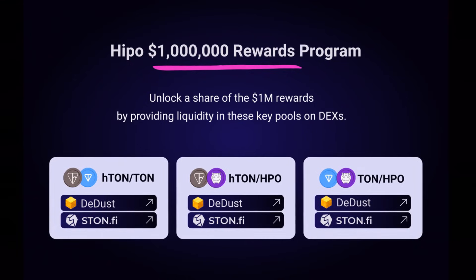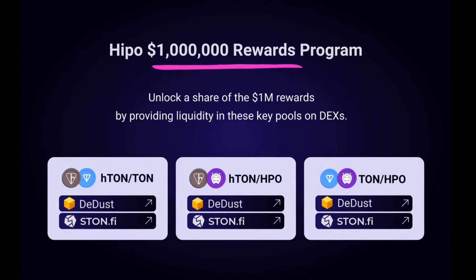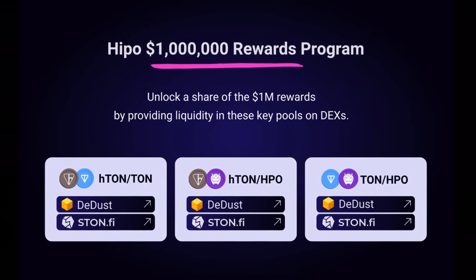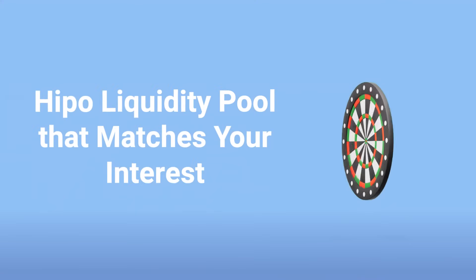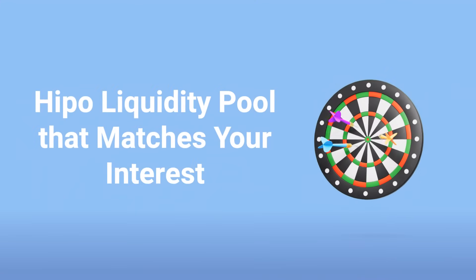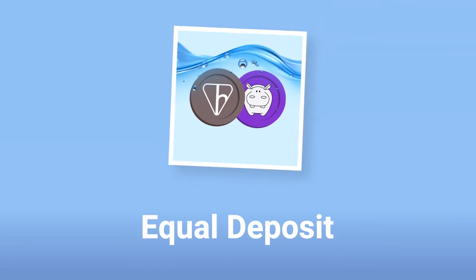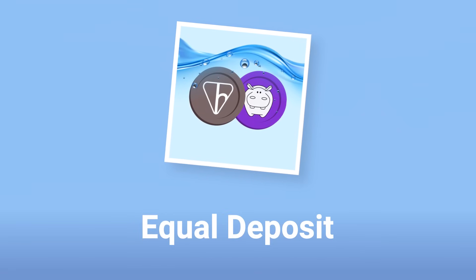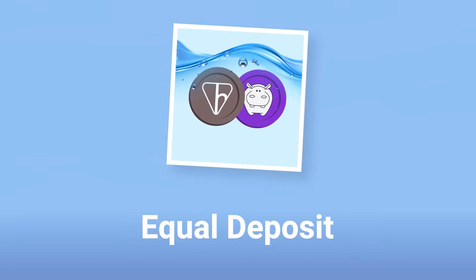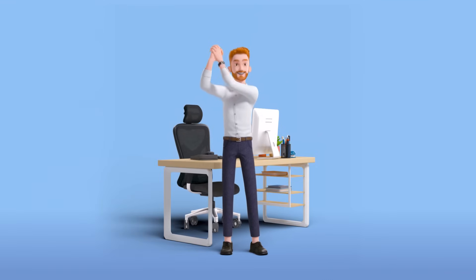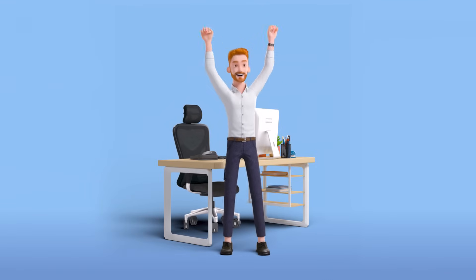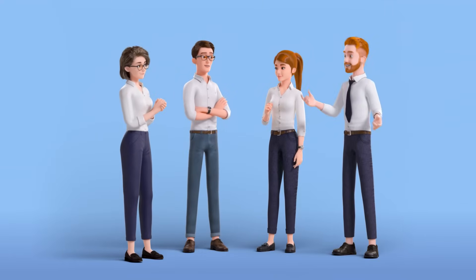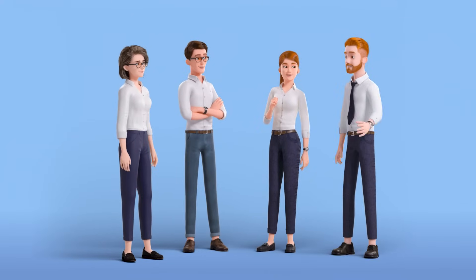Visit the DEX of your choice — a list of supported DEXes is available on HIPO's official website under the HPO page. Select a HIPO liquidity pool that matches your interest. Remember to deposit equal values of both tokens in the pair, such as HPO and HTAN, into the pool. By providing liquidity, you're not just earning trading fees and rewards — you're playing a vital role in strengthening HIPO's ecosystem and driving decentralization.